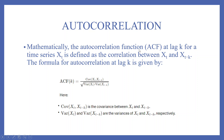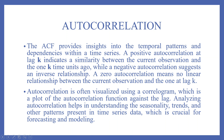Mathematically, the autocorrelation function ACF at lag k for a time series xt is defined as the correlation between xt and xt-k. The formula for autocorrelation at lag k is given by: ACF(k) = covariance(xt, xt-k) divided by the square root of variance(xt) multiplied by variance(xt-k). The ACF provides insights into the temporal patterns and dependencies within a time series.